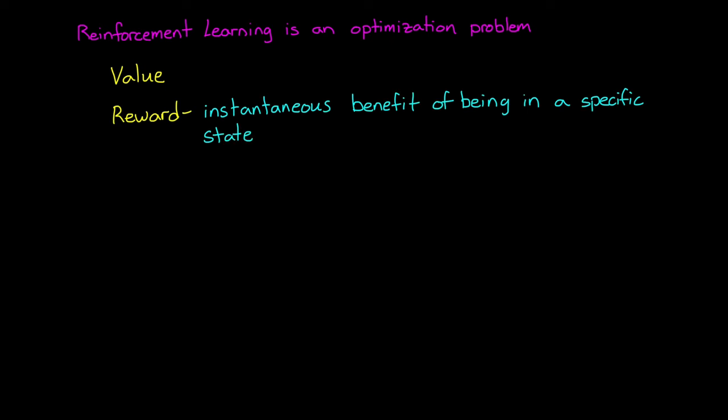Now, at its heart, reinforcement learning is an optimization problem, but there are some very interesting concepts that set reinforcement learning apart from other optimization techniques. First is the idea of value. Reward is the instantaneous benefit of being in a specific state, whereas value is the total reward that an agent can expect to collect from that state and onwards into the future. Assessing the value of a state, rather than assessing the reward, helps the agent choose the action that will collect the most reward over time, rather than a short-term benefit.